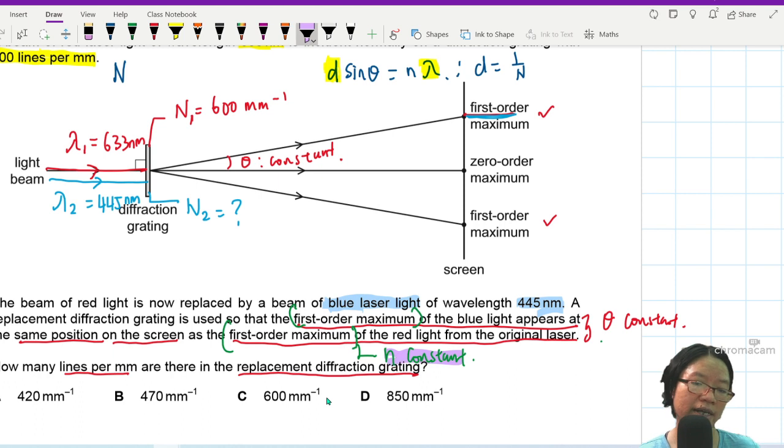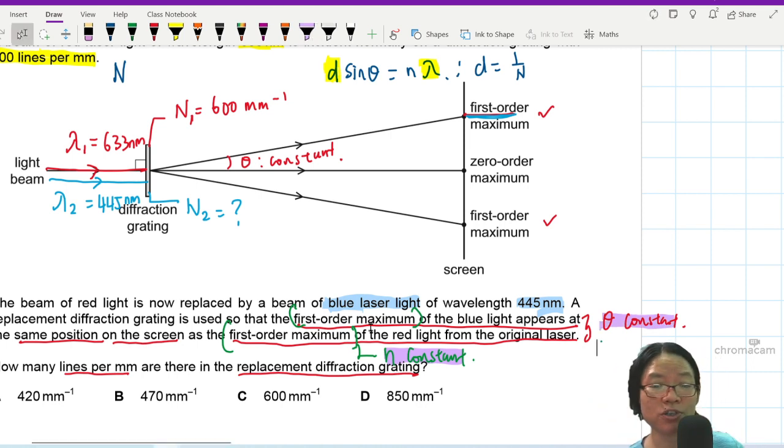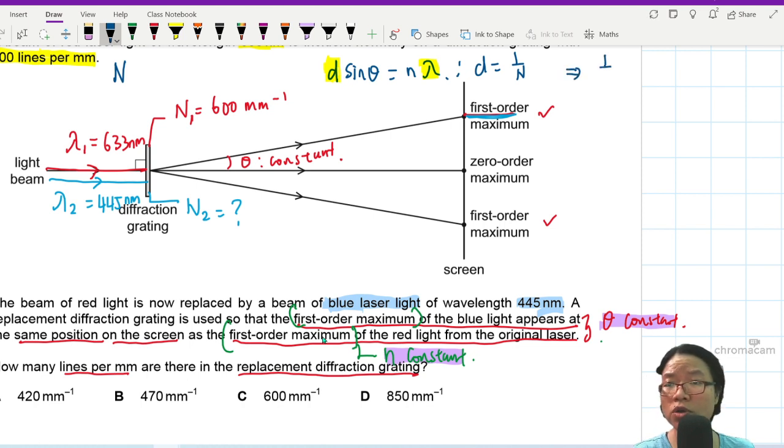My friends if when you see the paper and they tell you first order for red light is the same position as second order for blue light then your N is not the same. But today is the same. But if they put first order is the same position as the second order then N is not the same. Then you treat your ratios accordingly. So from here I can modify my equation. 1 over N is proportional to lambda because everything else is constant. Theta and N constant.